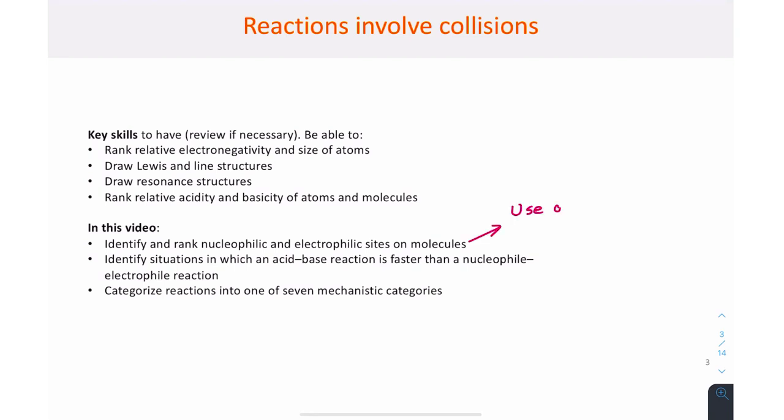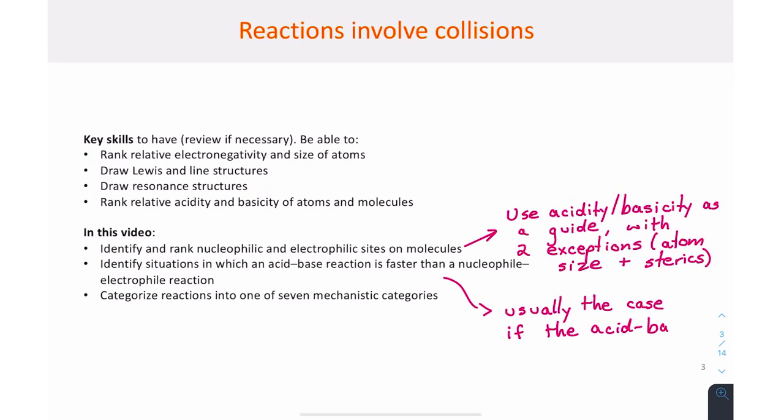We focused on ionic reactions between nucleophiles and electrophiles. We can rank these species using the same factors that we used to rank acids and bases, with two exceptions that involve the nucleophilic atom's size and steric hindrance. We saw that acid-base reactions are usually faster than nucleophile-electrophile reactions, particularly if the acid-base equilibrium favors the products.